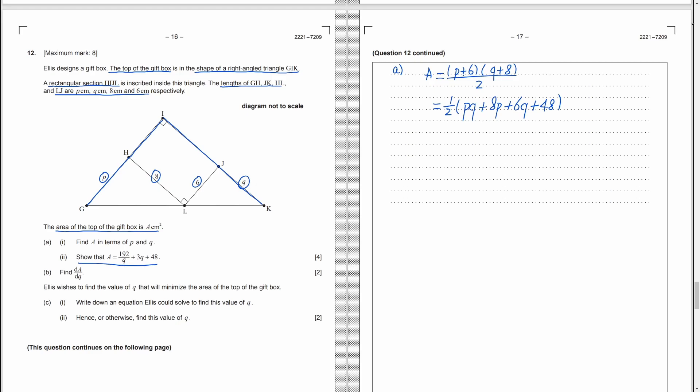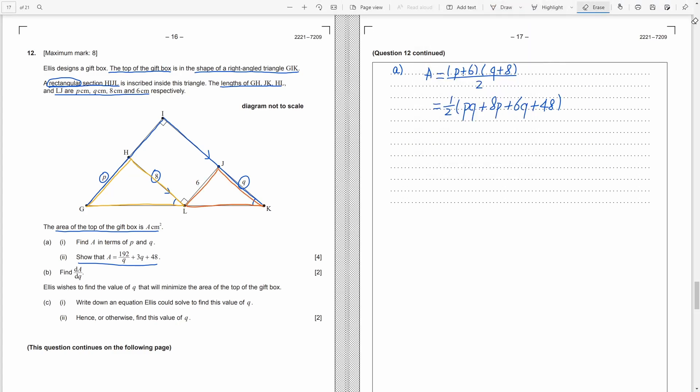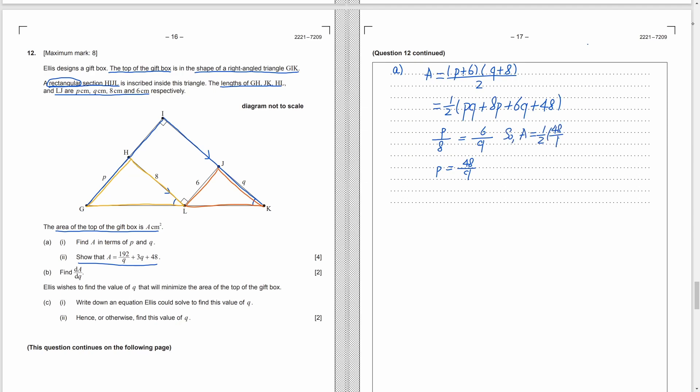Then we need to write A only in terms of Q. So we need to find another equation that connecting Q and P together, such that we can replace P by the expression in terms of Q. When we see a rectangle inscribed inside a triangle, we need to know that the lines here are parallel lines. And the angles here are the same. Thus, these two triangles are similar. This trick often exists in the geometry questions. Similar triangles are always used in this kind of questions. So, by the same ratio, we have P over 8 equals 6 over Q. Then, we can make P to be the subject and put it back to the previous expression of A. Finally, after simplification, we get the answer.